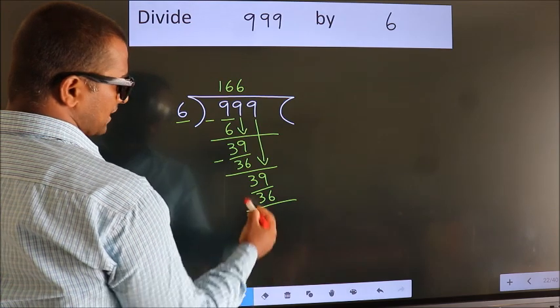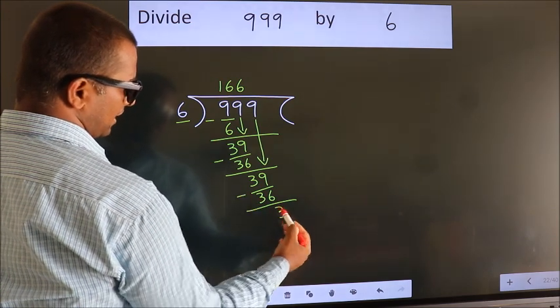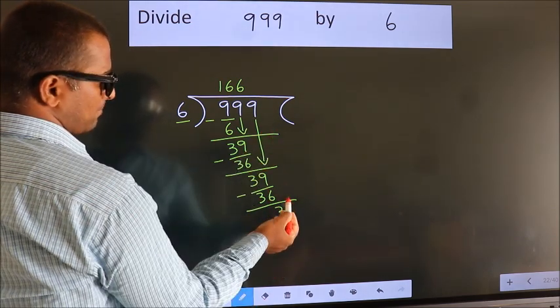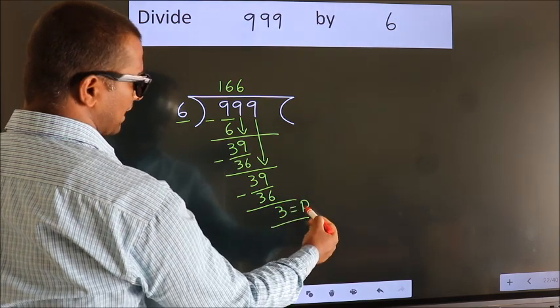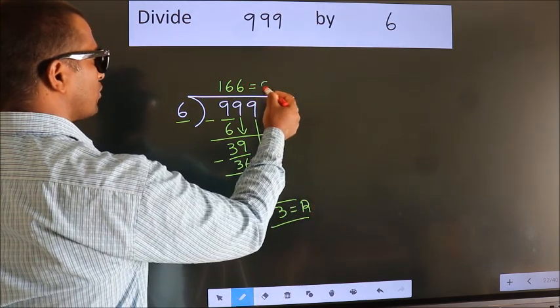Now, we subtract. We get 3. No more numbers to bring it down. So, we stop here. This is our remainder. This is our quotient.